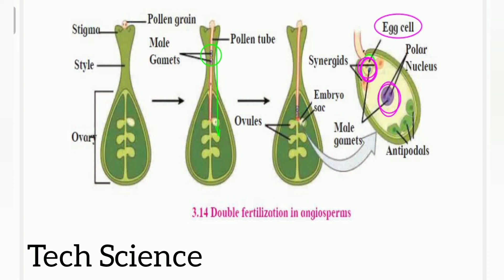This is the complete process of double fertilization. In this video, we clarified two concepts: first, the structure of the flower, and second, how sexual reproduction occurs through the process of fertilization, and why it is called double fertilization. I hope you liked the video. Please subscribe to my channel and press the bell icon for new notifications. Thank you.